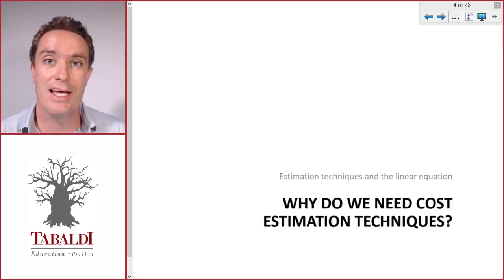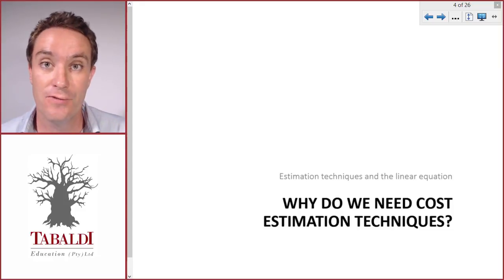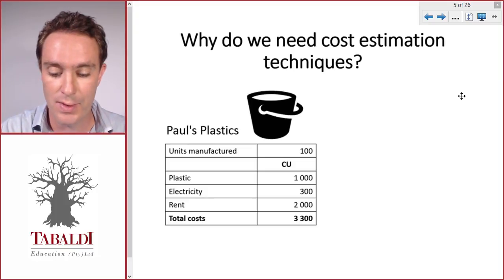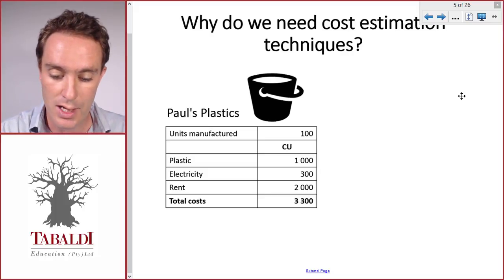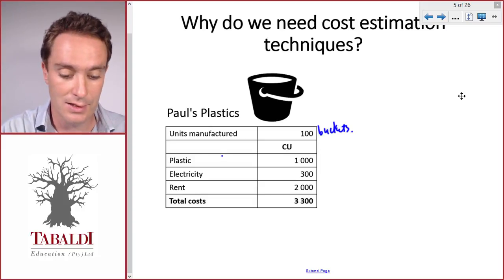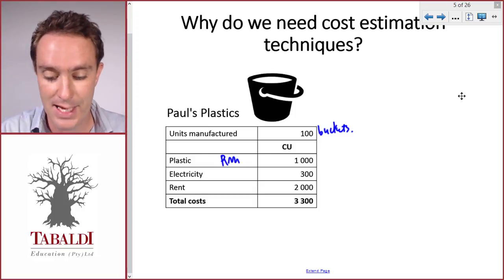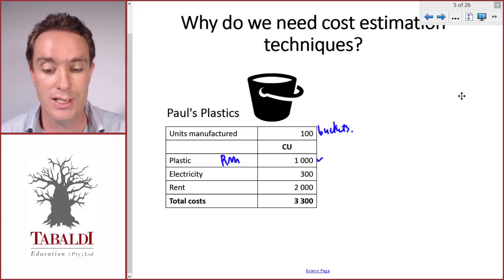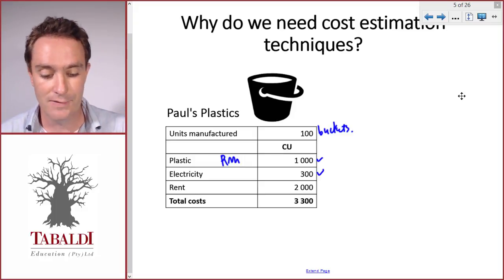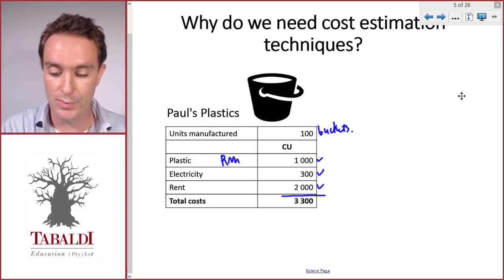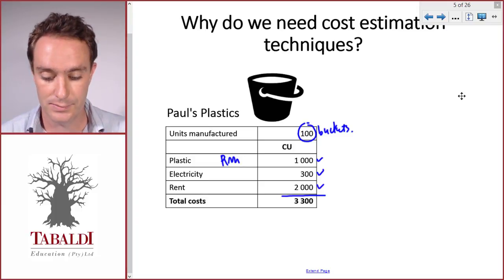Let's take a quick look at the problem we face when estimating future costs. I'm going to use an example of Paul's Plastics. Paul manufactures plastic buckets and he's made a list of his costs for the past month in which he produced a hundred buckets. His first cost was plastic, a raw material, which cost him a thousand. He also used electricity to heat the molding machine, costing three hundred. Finally, he pays two thousand per month to rent the machine. The total cost to make the hundred buckets amounts to three thousand three hundred.